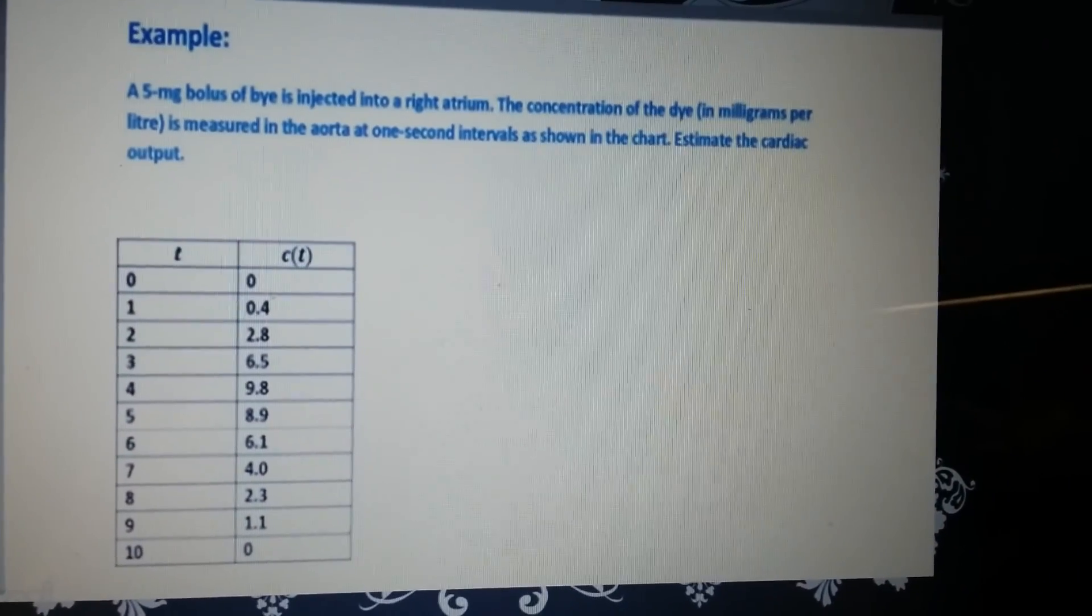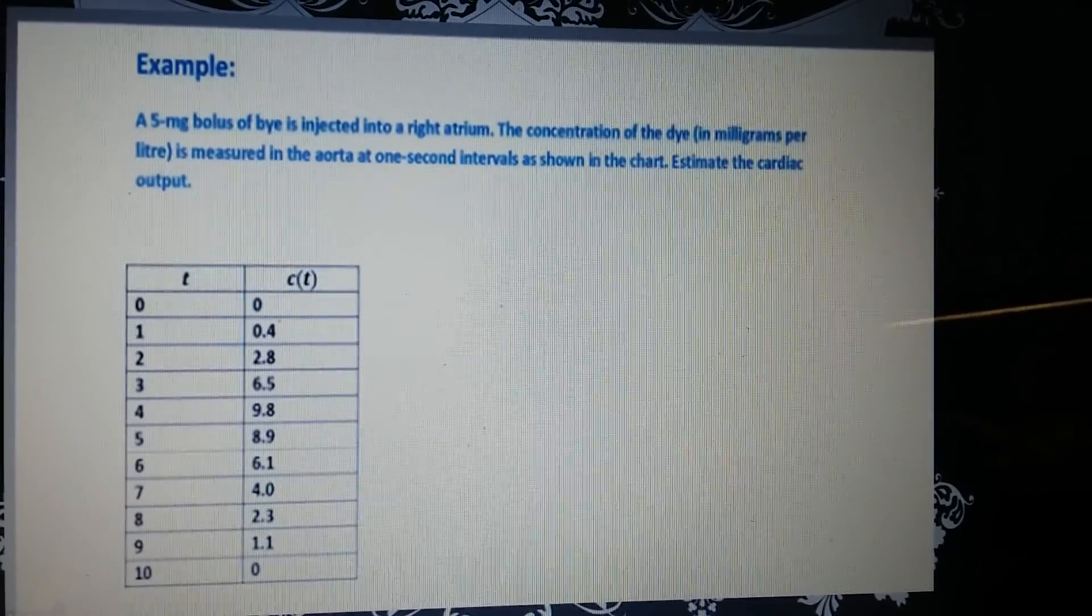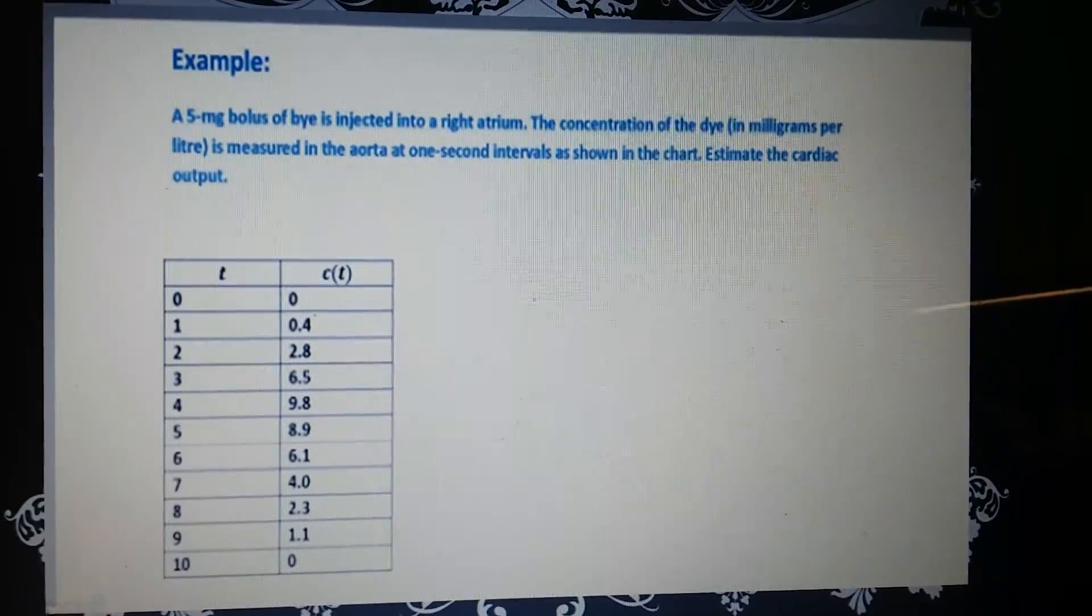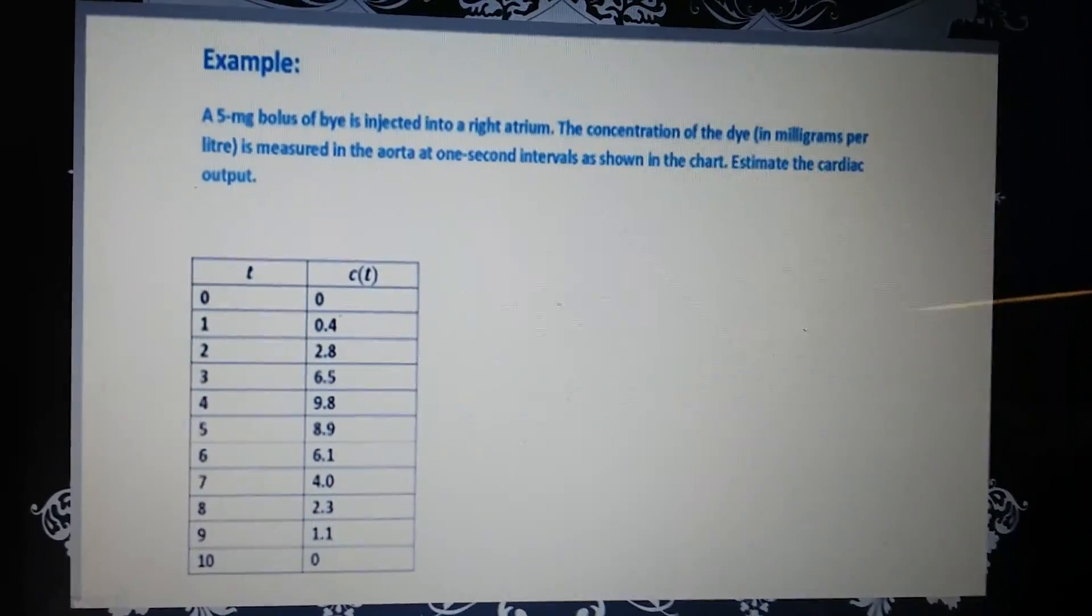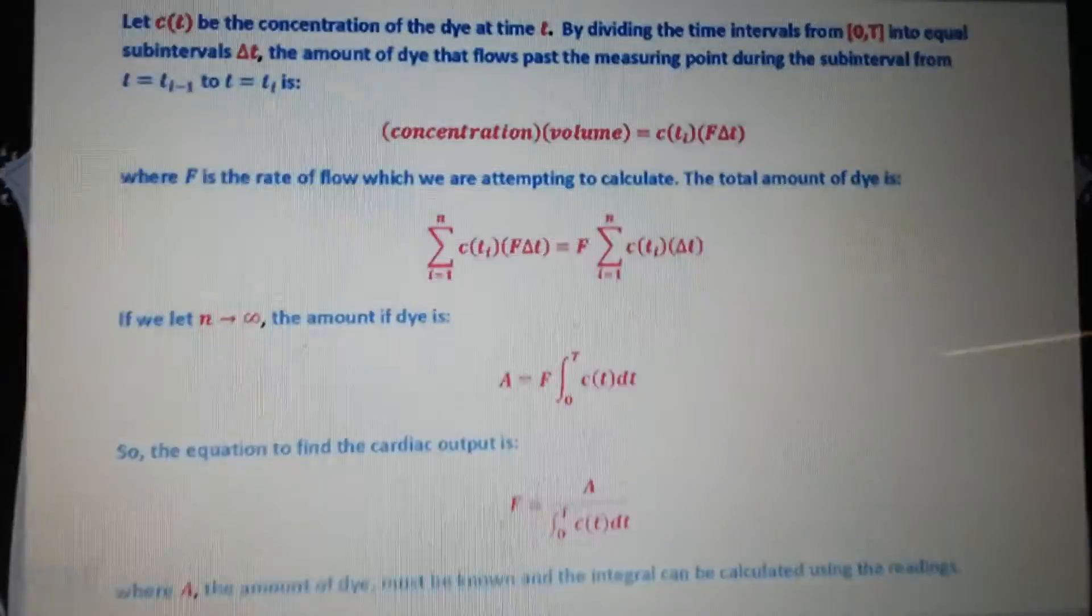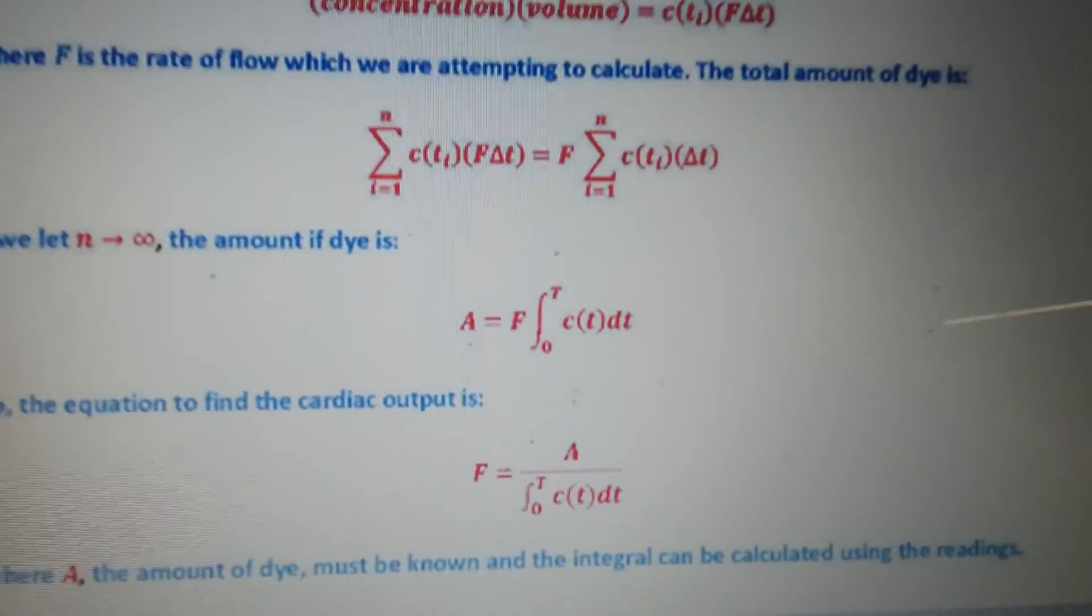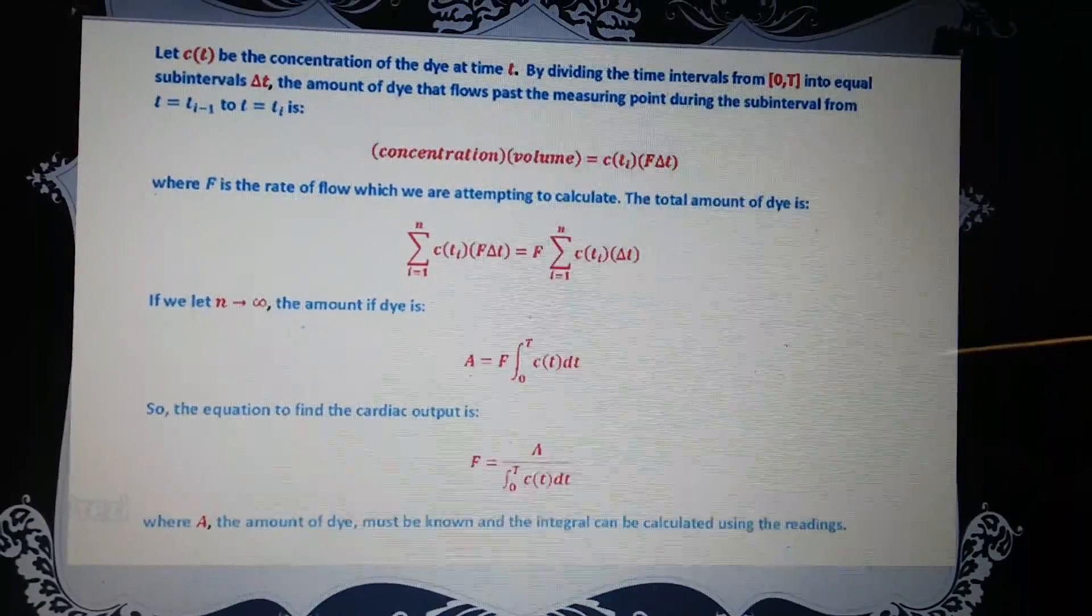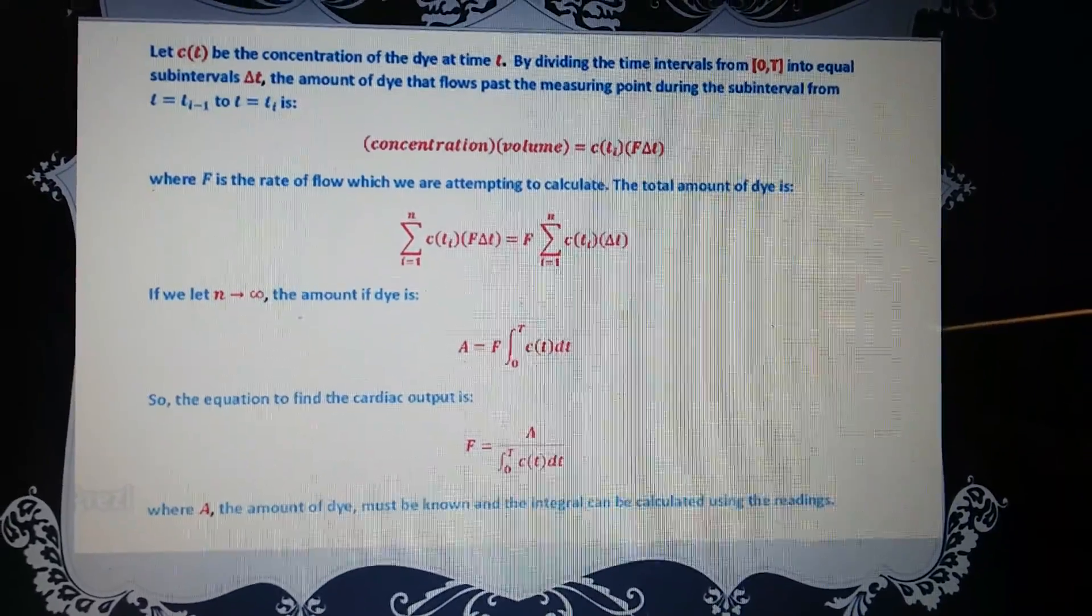An example, 5 milligrams of dye is injected into the right atrium. The concentration of the dye in milligrams per liter is measured in the aorta at 1 second intervals, as shown in the chart. Estimate the cardiac output. So we plug everything in. As you can see here, we're continuing using calculus. So it is important that we learn and understand how to use the equation because we'll be using that, especially in the medical field.